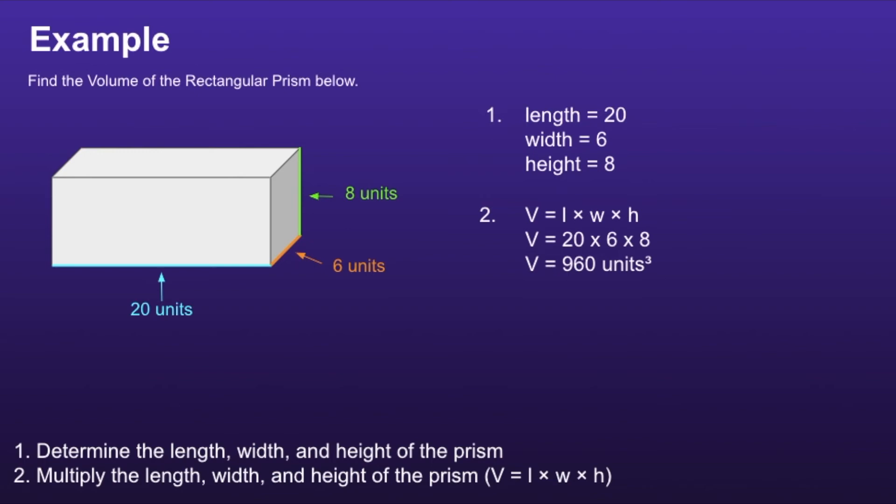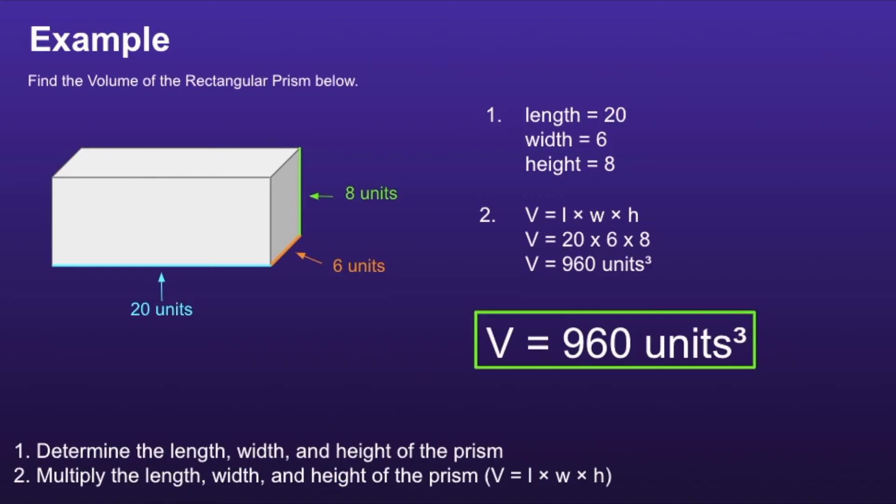So the volume of the rectangular prism is 960 units cubed. Notice for volume we use cubed, which is that little 3 after the units.